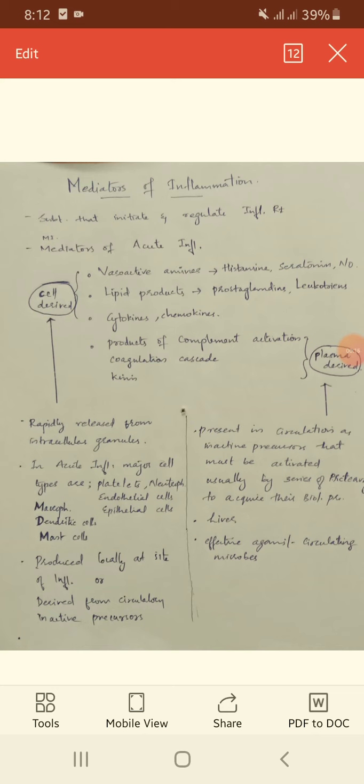Causative agents include infectious agents like bacteria, viruses, fungi, parasites, and toxins. Immunological agents, physical agents, chemical agents, and foreign bodies are also agents of inflammation.